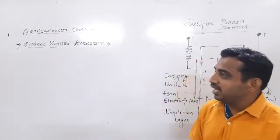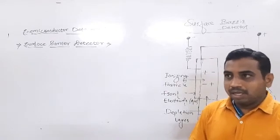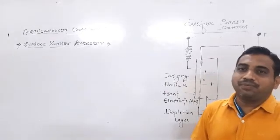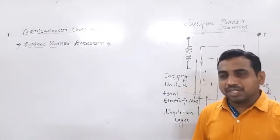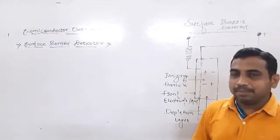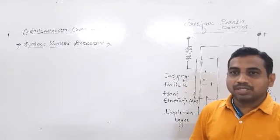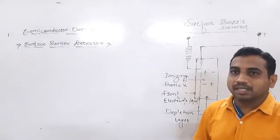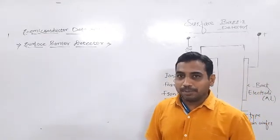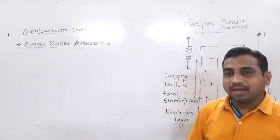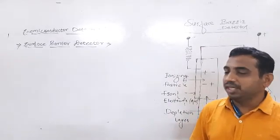The first type we saw was the diffused junction detectors. The important feature of these diffused junction detectors is that we use NP junctions by diffusing some amount of impurities held on the P-type semiconductor to form the N-type. We studied about the diffused junction detectors in that context.